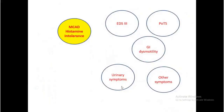Now, histamine intolerance and mast cell activation disorder. A lot of Sri Lankans are hypermobile — we did a study on this; many dancers and gymnasts are hypermobile. Some patients with hypermobility have a spectrum of conditions: GI dysmotility, POTS, EDS, urinary symptoms, and endocrine symptoms. We are increasingly seeing this combination as immunologists and allergists in the UK. If patients are very hypermobile and have some of these features, consider the allergy aspect also coming into the mix.